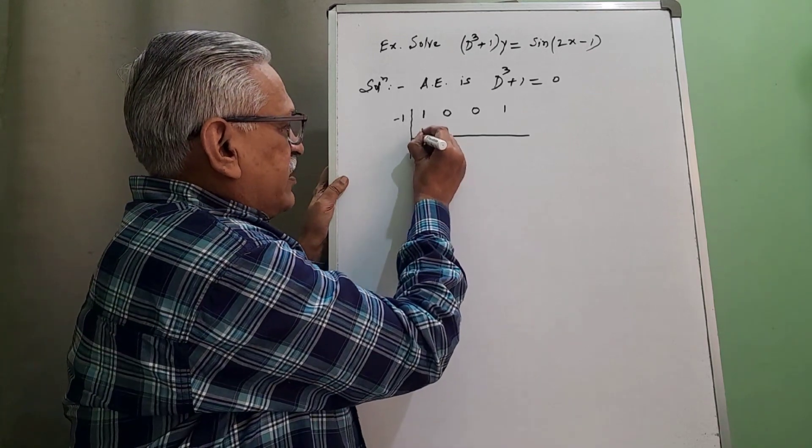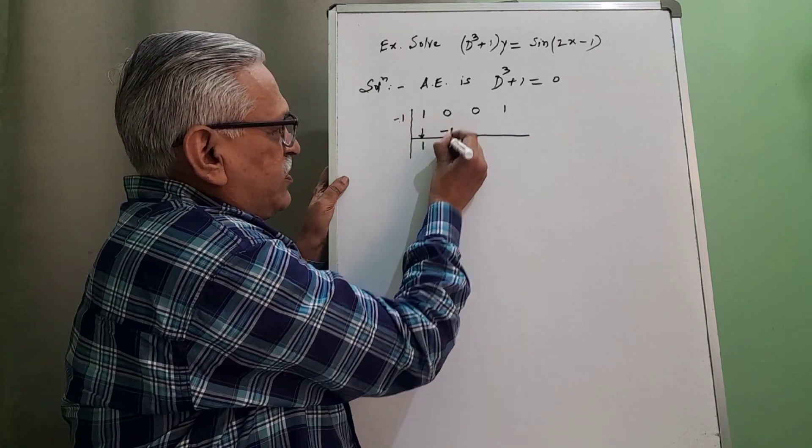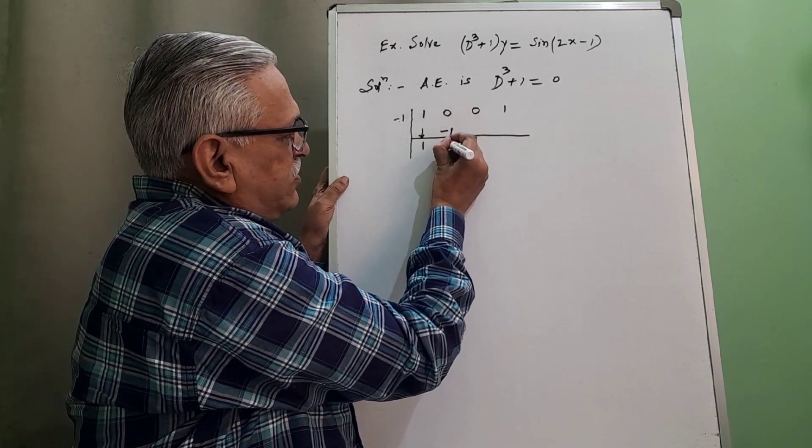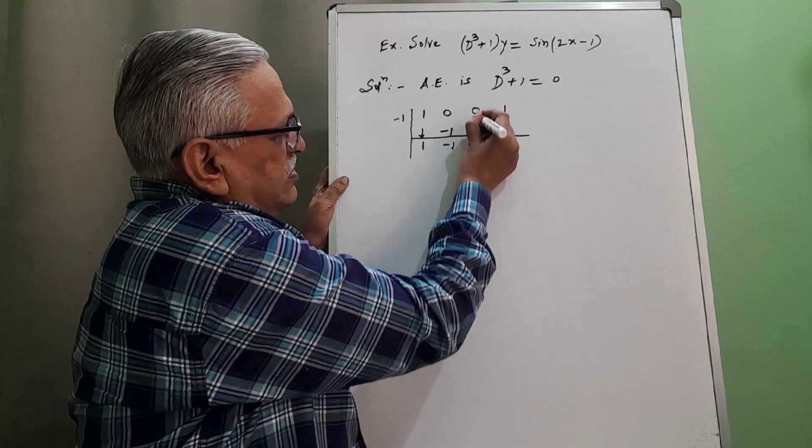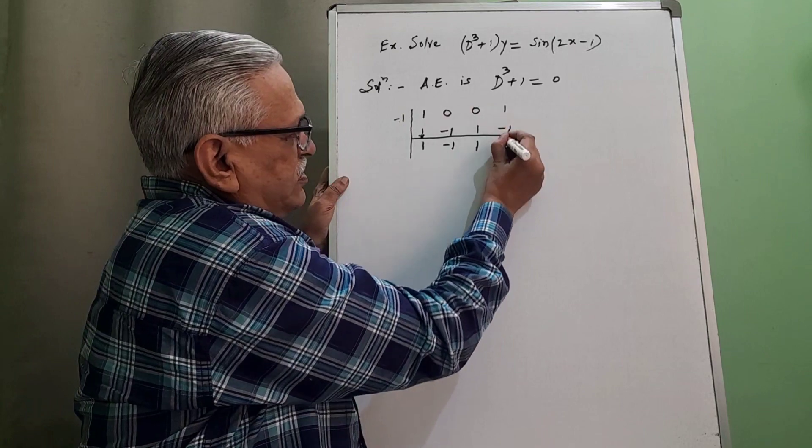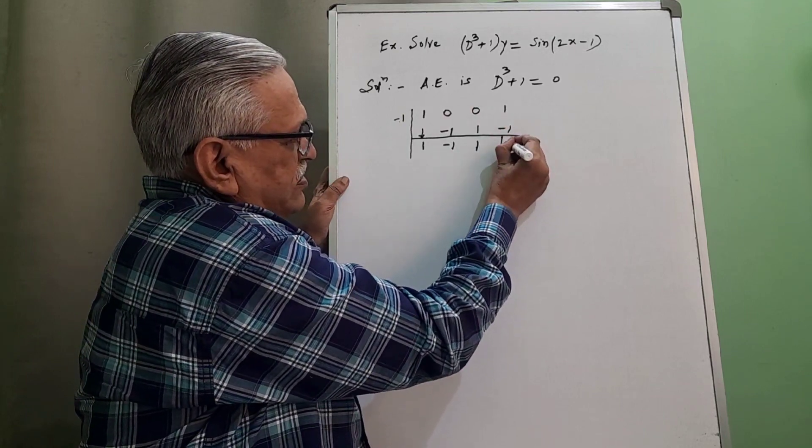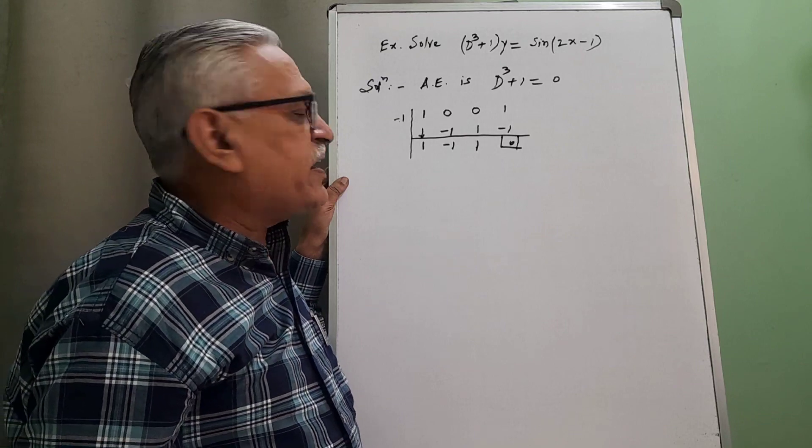Therefore 1 plus 0 is 1, and sum of even coefficient, 0 plus 1 is 1, equal. And therefore we can take minus 1 as the required root directly. Taking this 1 as it is, 1 into this minus 1, we get minus 1. 0 plus minus 1, we get minus 1. Minus 1 into minus 1 is 1. 0 plus 1 is 1. 1 into minus 1 is minus 1. Sum is 0, and as the last sum is 0, minus 1 is the root.